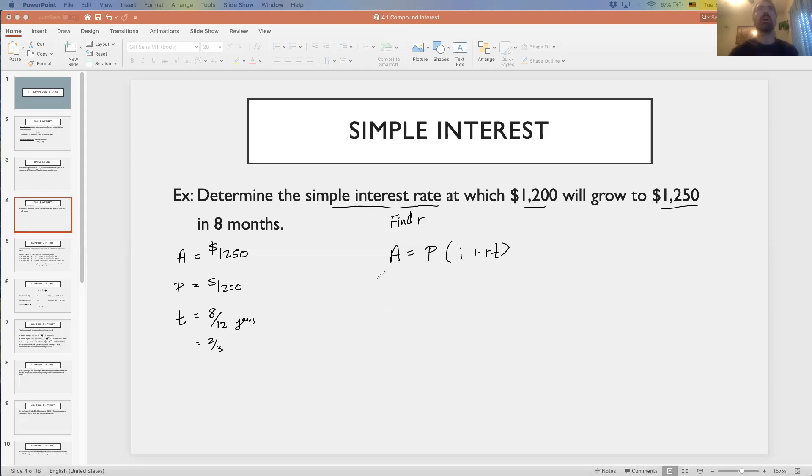A is 1,250, P is 1,200, and T is two-thirds. What am I trying to solve for? I'm trying to solve for this R, so I need to get R by itself.